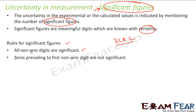Rule 2: Zeros preceding the first non-zero digit are non-significant. For example, 0.28 or 00.28 — these leading zeros are non-significant. But the digits 2 and 8 are significant.